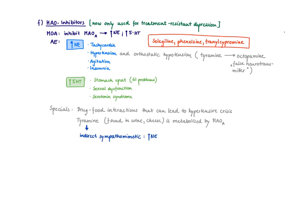One other thing to mention: MAO inhibitors also frequently cause orthostatic hypotension, which seems contradictory given all the discussion about increasing norepinephrine and hypertensive crisis. The mechanism that may explain this is that tyramine accumulation gives rise to different metabolites, one of them being octopamine. Octopamine acts as a false neurotransmitter, similar in mechanism to the antihypertensive medication methyldopa. So different things can happen to your blood pressure when taking an MAO inhibitor. This concludes the video on antidepressants.